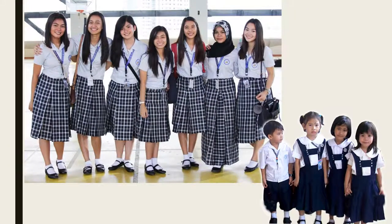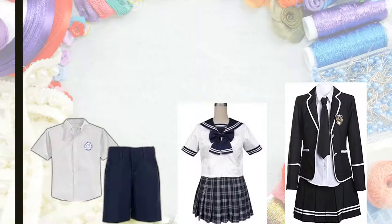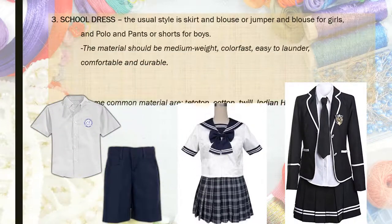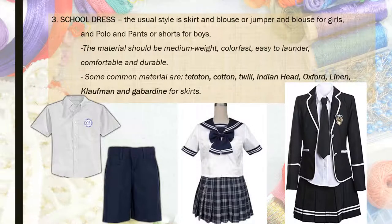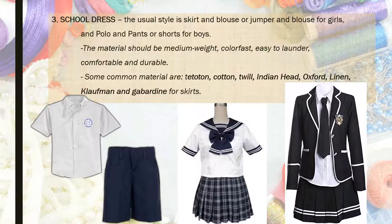How about this one? Very good! These are school dresses. The usual style is skirt and blouse or jumper and blouse for girls, and pants or shorts for boys. The material for the school dress should be medium weight, colorfast, easy to launder, comfortable, and durable. Some of the materials used are Tetheron, cotton, twill, Indian head, Oxford, linen, Clothman, and gabardine for skirts.